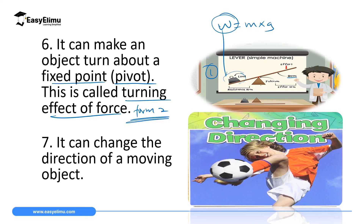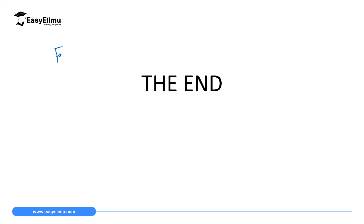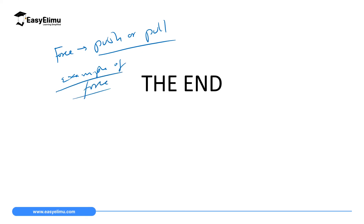Another effect of force is that it can change the direction of a moving object. For example, in football, when someone kicks a ball toward the goalkeeper, the goalkeeper applies a force to redirect the ball to the opponent's side — changing the direction of a moving object using force. In summary, we have defined force as a push or pull when bodies interact, highlighted examples of forces such as weight, magnetic force, electrostatic force, and centripetal force, and looked at the effects of force.